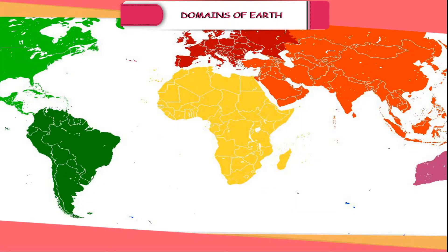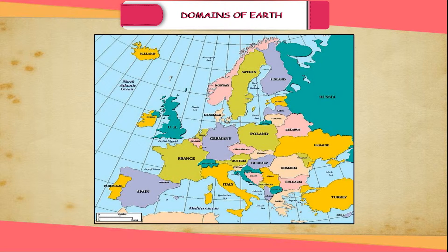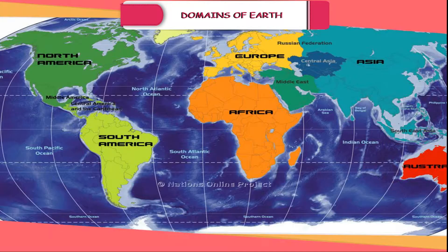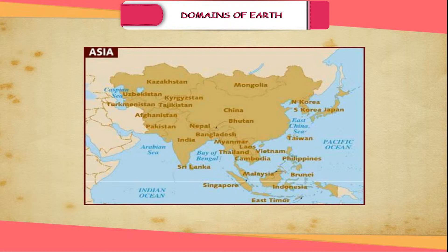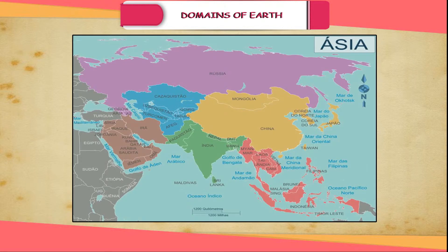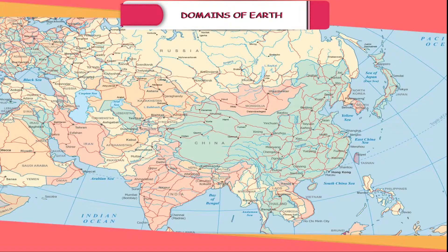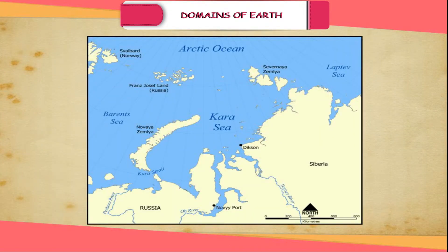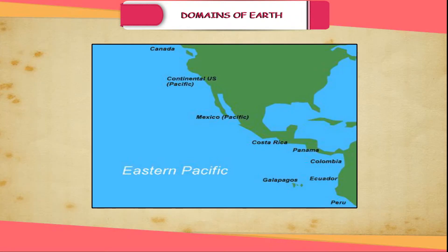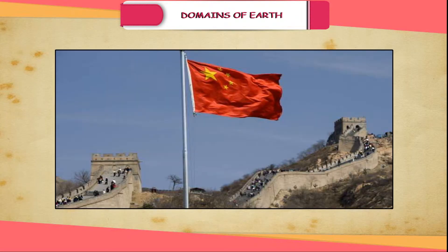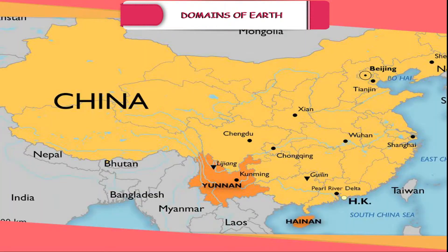Asia is the largest continent of the world, covering an area greater than Europe and Africa put together. Sometimes Europe and Asia are together known as Eurasia. Asia is separated from Europe by the Ural Mountains and the Caspian Sea on the west. This continent covers about one-third of the total land area of the world and lies in the Eastern Hemisphere. The Tropic of Cancer passes through it, and it is bounded by the Arctic Ocean to the north, the Indian Ocean to the south, and the Pacific Ocean to the east. It has two most populous countries of the world, namely China and India.